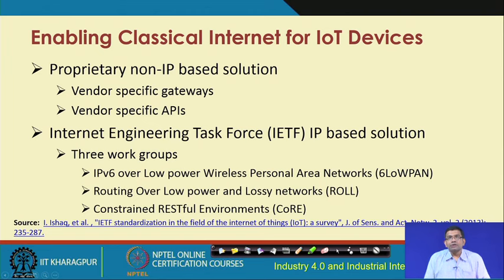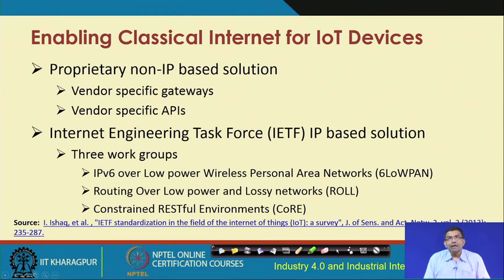We have proprietary non-IP based solutions which use vendor specific gateways and vendor specific solutions of all kinds including APIs. On the contrary, we have IETF IP-based solutions where there are different initiatives to support IoT, like 6LoWPAN - which talks about IPv6 over Low Power Wireless Personal Area Networks. This is the one we discussed in the context of connectivity in the previous lecture.